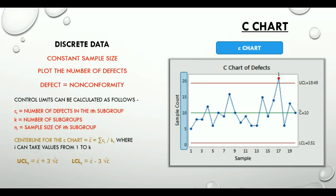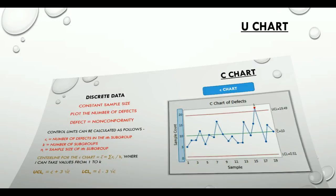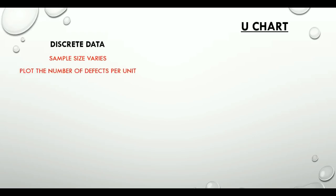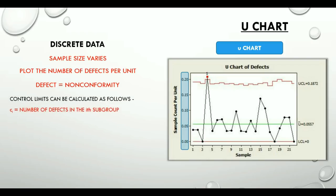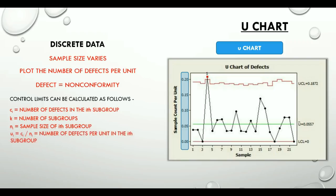Now let's look at the last discrete control chart, which is the U chart. This chart is used when the sample size varies and it plots the number of defects per unit. A defect, as we know, is a non-conformity. If you look at the y-axis on the sample U chart, it shows the count of defects per unit. To calculate the control limits, we need CI — the number of defects in the ith subgroup — K, the number of subgroups, NI — the sample size of the ith subgroup — and additionally UI, which is the number of defects per unit in the ith subgroup, calculated as CI divided by NI.